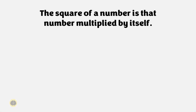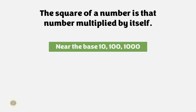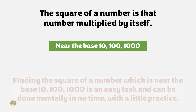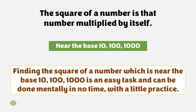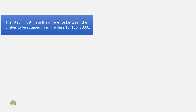Welcome to SimplyLogical, this is Venkdesh. The square of a number is that number multiplied by itself. In this video I will explain the tricks which can be used to find squares which are nearer to the base numbers. This technique is easy as you hardly need to memorize anything, and understanding this part is important as you can base it on other such types of squaring methods. Finding the square of a number which is near the base 10, 100, or 1000 is an easy task and can be done mentally in no time with a little practice. Just follow the steps carefully which I am going to explain now.